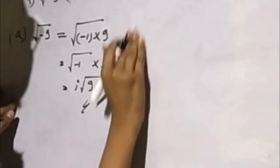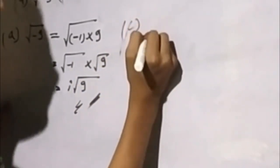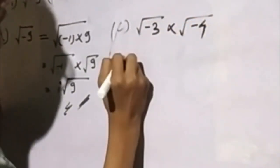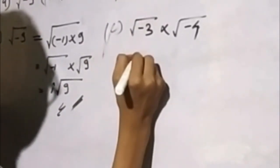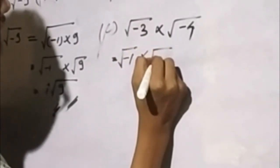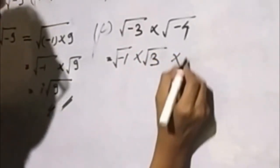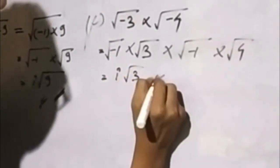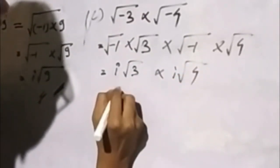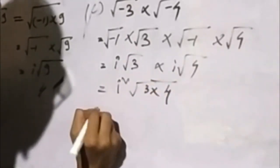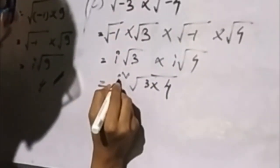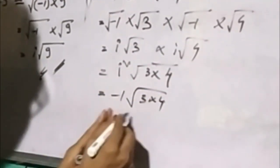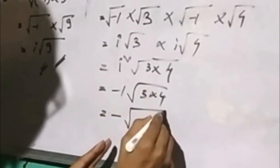i² that another, c2, root over 3, inter root over minus 4 equal to. A, root over minus 1 into root over 3 into root over minus 1 into root over 3, root over 3 into i, root over 2. So minus 1, root over 3 into 4 equal to minus 1, minus root over minus root over minus root.